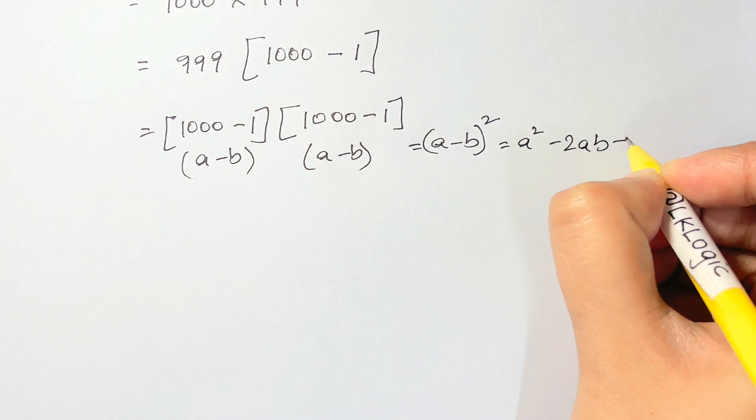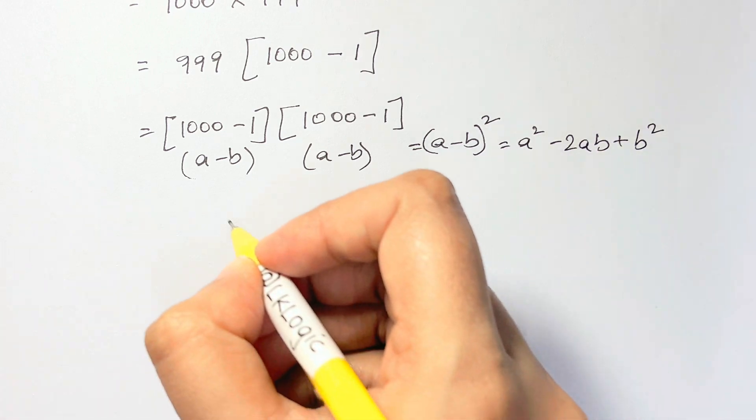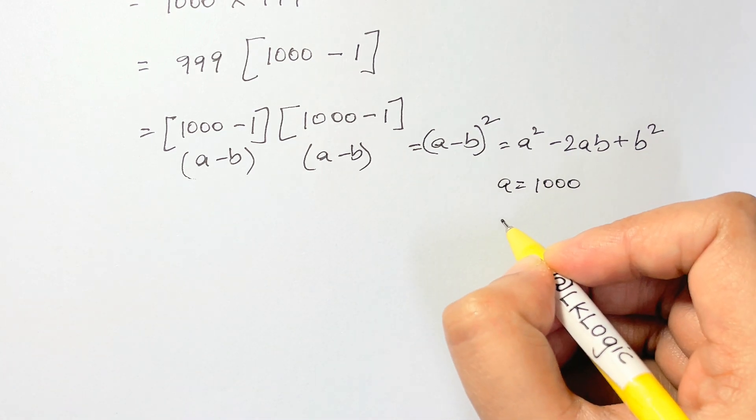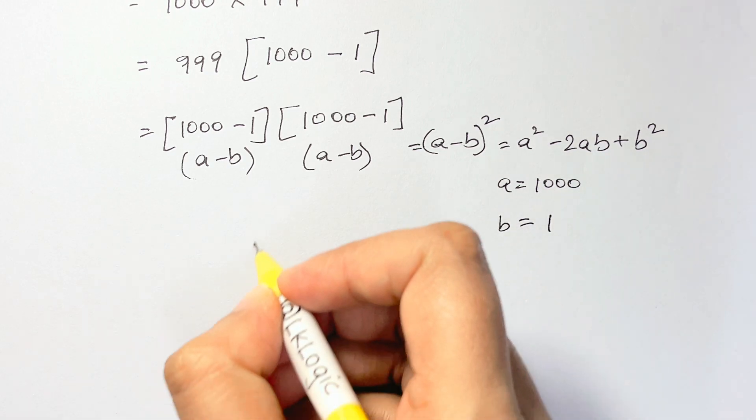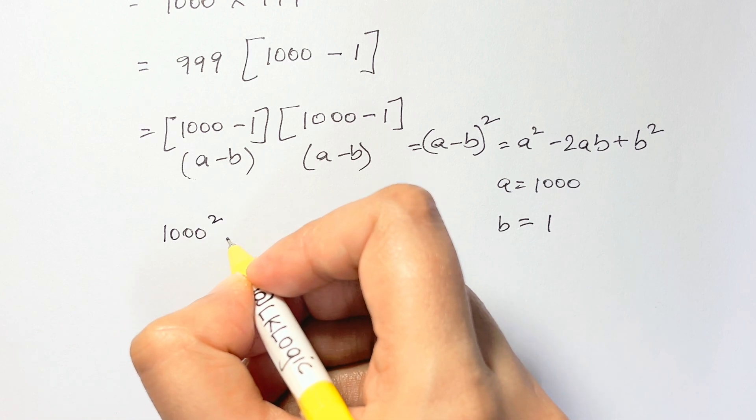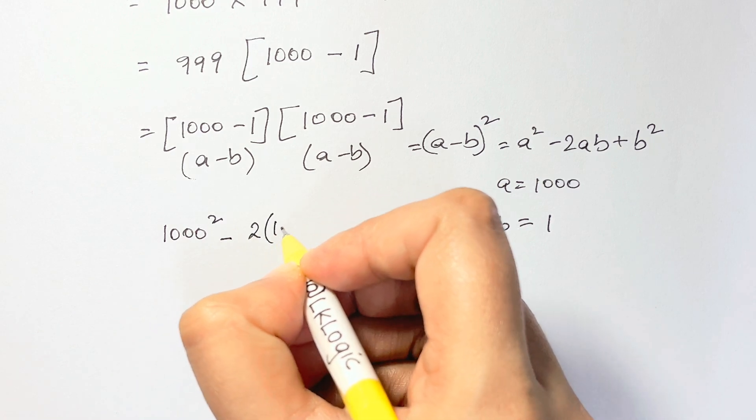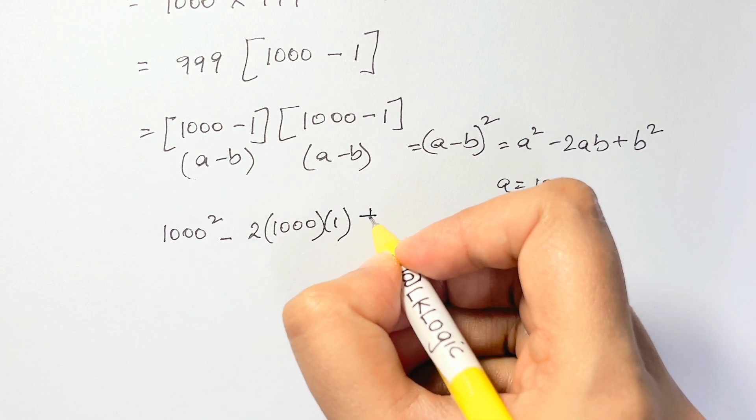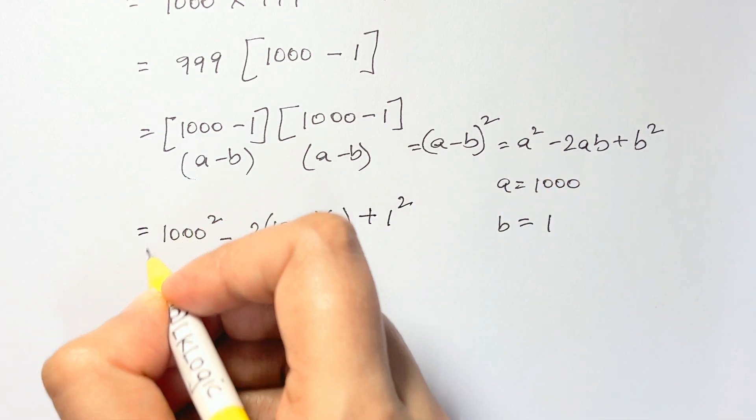How can we write (a minus b) squared? It's a squared minus 2ab plus b squared. Let's substitute: a is 1000 and b is 1. So we have 1000 squared minus 2 times 1000 times 1 plus 1 squared.